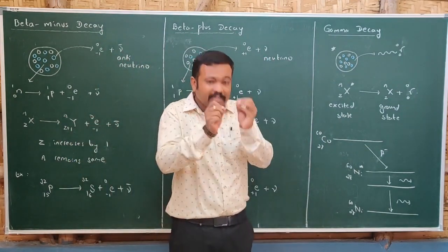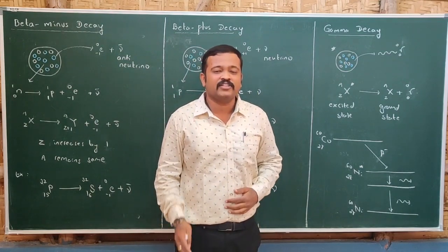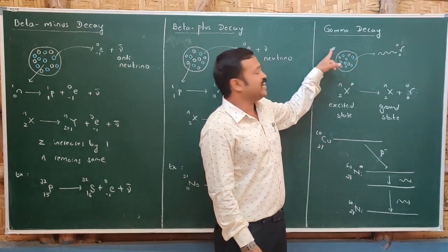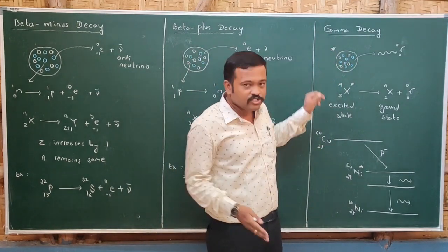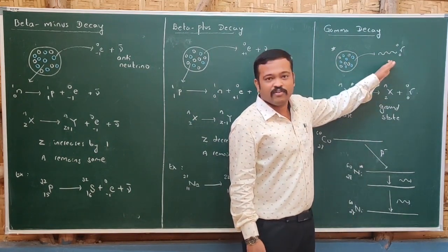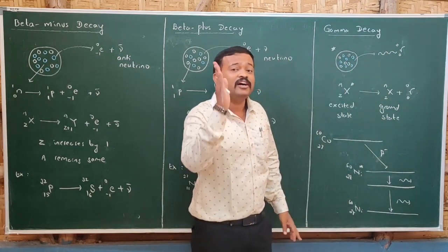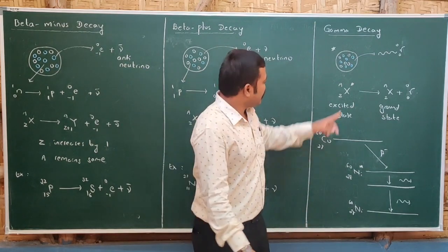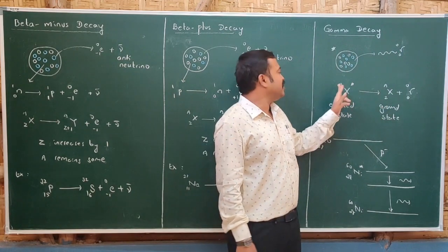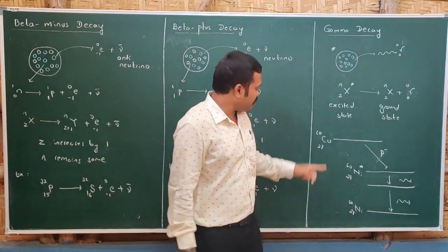Let us move on to gamma decay. Gamma decay takes place whenever the nucleus is in an excited state. After alpha and beta decay, this gamma decay takes place. If the nucleus is in the excited state, it comes to the ground state by emitting a certain kind of radiation — that radiation is gamma radiation. This electromagnetic wave does not have any charge or mass, so there is no change in atomic number or mass number. There is only a change in state from excited to ground state.